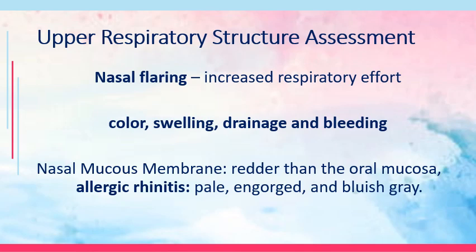For upper respiratory structure assessment, nasal flaring — also referred to as alar flaring — indicates increased respiratory effort, oftentimes manifested by redness of the nares. You also watch out for color, swelling, drainage, and bleeding from upper respiratory tract structures. Drainage and bleeding could be indicative of trauma or internal injury, and could be a sign of epistaxis caused by a ruptured blood vessel inside the nasal cavity.